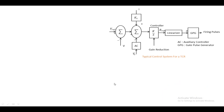The typical control diagram for the TCR uses a reference voltage compared against the bus voltage. The difference feeds into a reactor current gain, auxiliary control, and a voltage signal Vs generated based on frequency variations. This passes through an integrator linearizer and gate pulse generator (GPG) which generates pulses to T1 and T2. This control diagram is highly dependent on integral control.